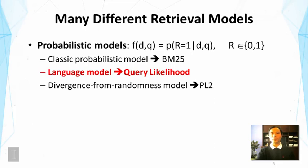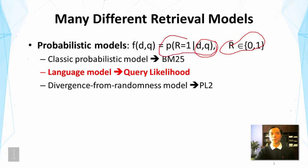In probabilistic models, we define the ranking function based on the probability that this document is relevant to this query. In other words, we introduce a binary random variable R. We also assume that the query and the documents are all observations from random variables. So the problem of retrieval now becomes to estimate the probability of relevance.